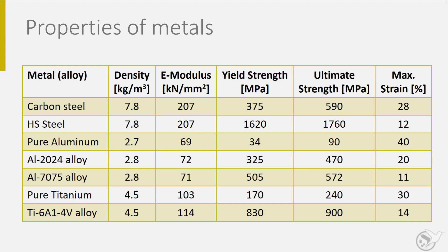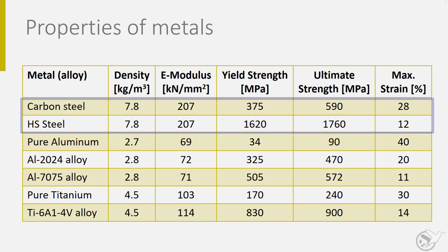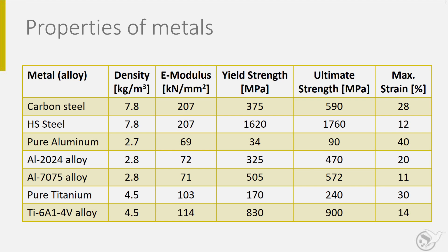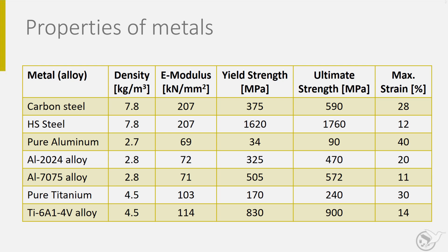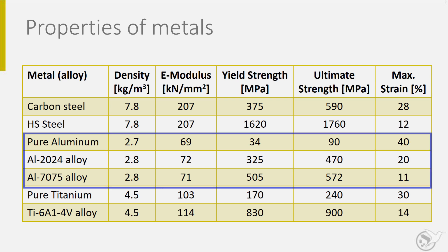In this slide you see seven metal alloys and their properties: two steel alloys, three aluminum alloys, and two titanium alloys. From the table, one can see that the density and E modulus are more or less constant within the same metal group, but other properties differ significantly. The three aluminum alloys show nicely the effect of alloying. Pure aluminum has low yield and ultimate strength but a high failure strength. When aluminum is alloyed, the strength values increase and the failure strength reduces.